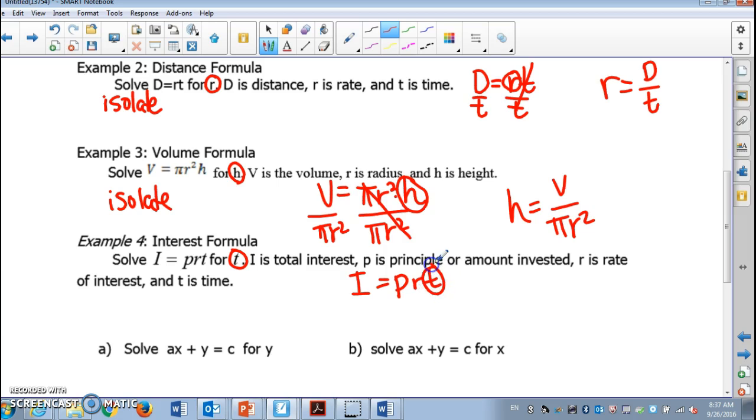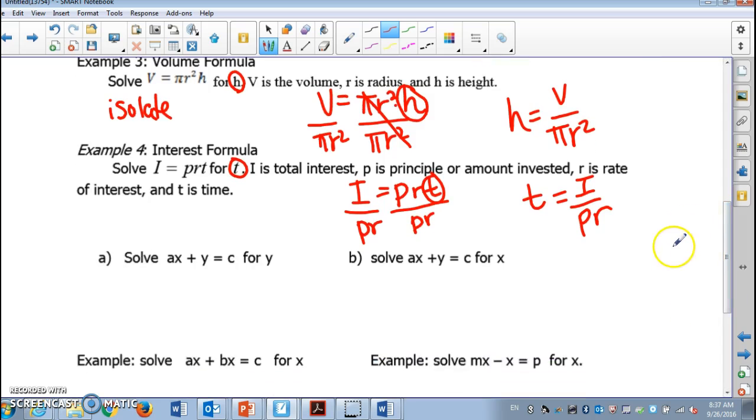How am I gonna isolate T? I need to get rid of P and R. What operation do you see among these three variables? All multiplication. So in order to undo that, I need to divide by PR from both sides. Therefore, T equals I over PR. I hope it's getting easier. Let's try the next one.